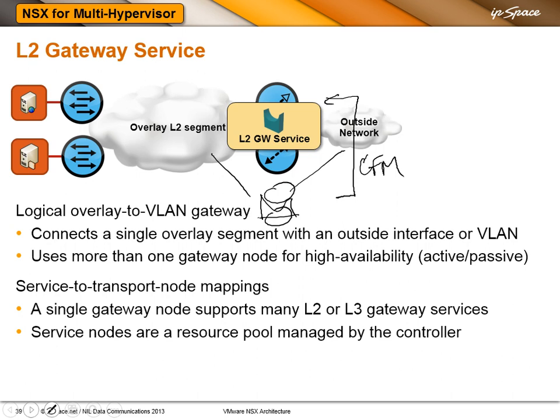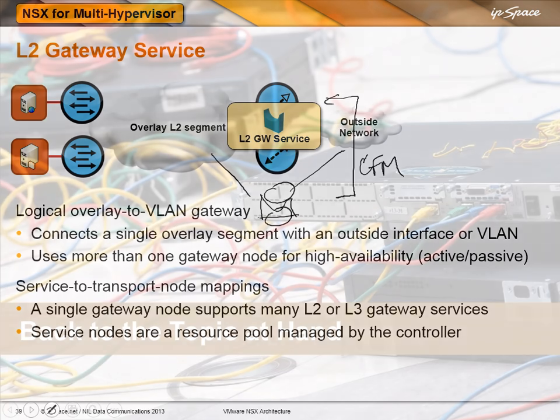Can the layer 2 gateway have a trunk port? Absolutely — that's the idea. Is there a high availability concern with high-speed gateways? Like with all the mechanisms we've been discussing, we have to detect that the gateway has failed and flip the service to another gateway. Are multiple layer 2 gateways supported per single overlay layer 2 segment? A single layer 2 logical segment like a logical switch within NSX would be mapped to a single layer 2 gateway service node. What's the throughput of the gateway node? Obviously it depends on hardware, but we're seeing close to 10 gigabits.